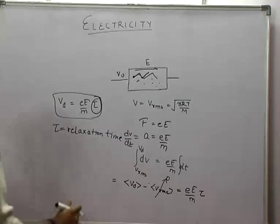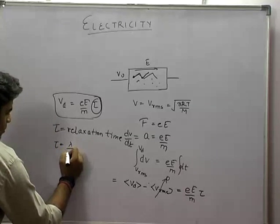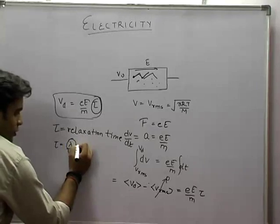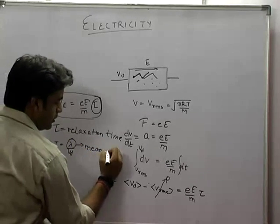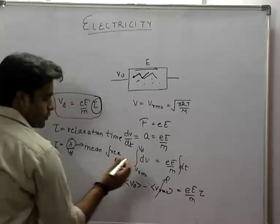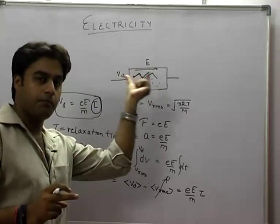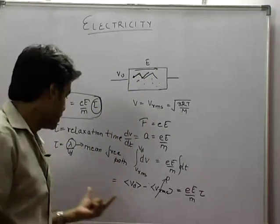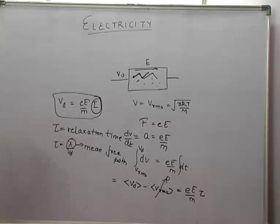This tau value is tau equals lambda upon vd. This is the mean free path, called lambda, and tau is given by lambda by vd.